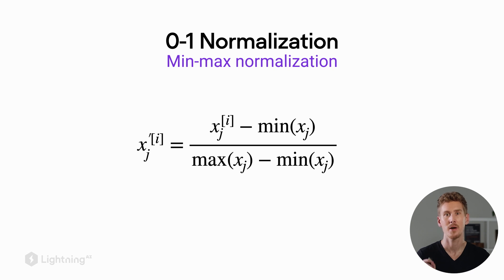Now, one common normalization technique is zero-one normalization, or sometimes also called min-max normalization. Here we have the feature value xj of the ith training example. In order to normalize this feature value, we subtract the minimum value of the feature column j and then divide this value by the maximum of feature column j minus the minimum of feature column j.